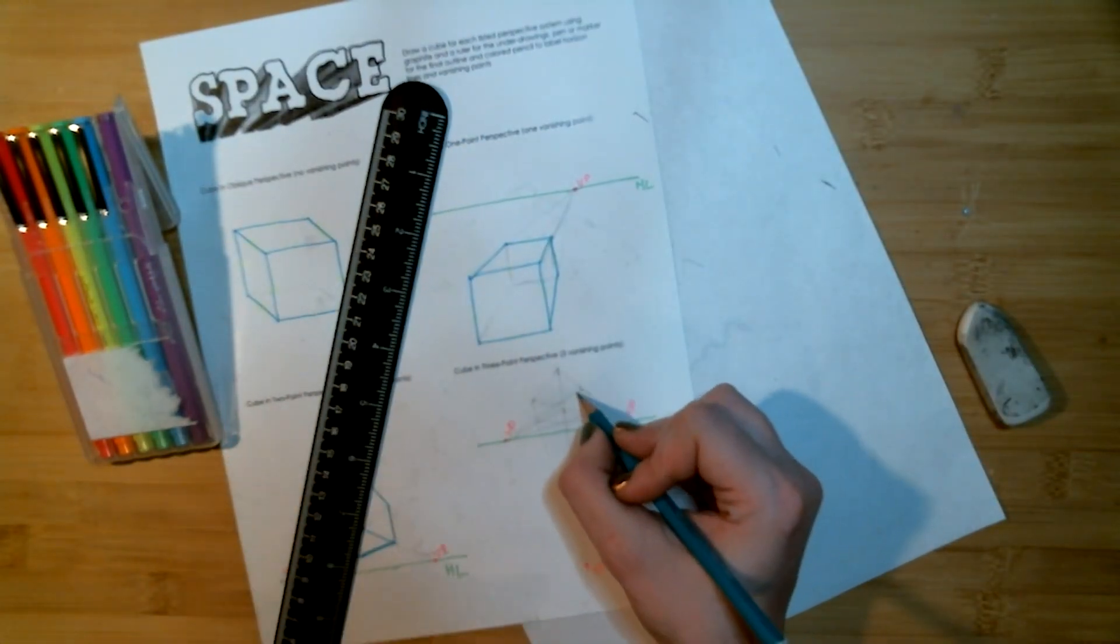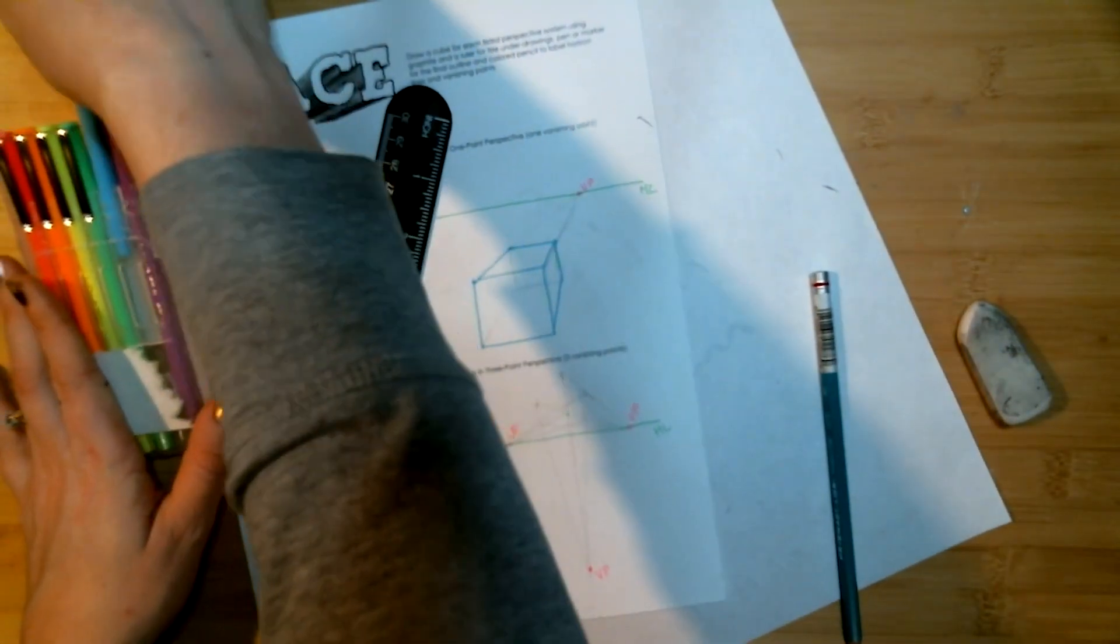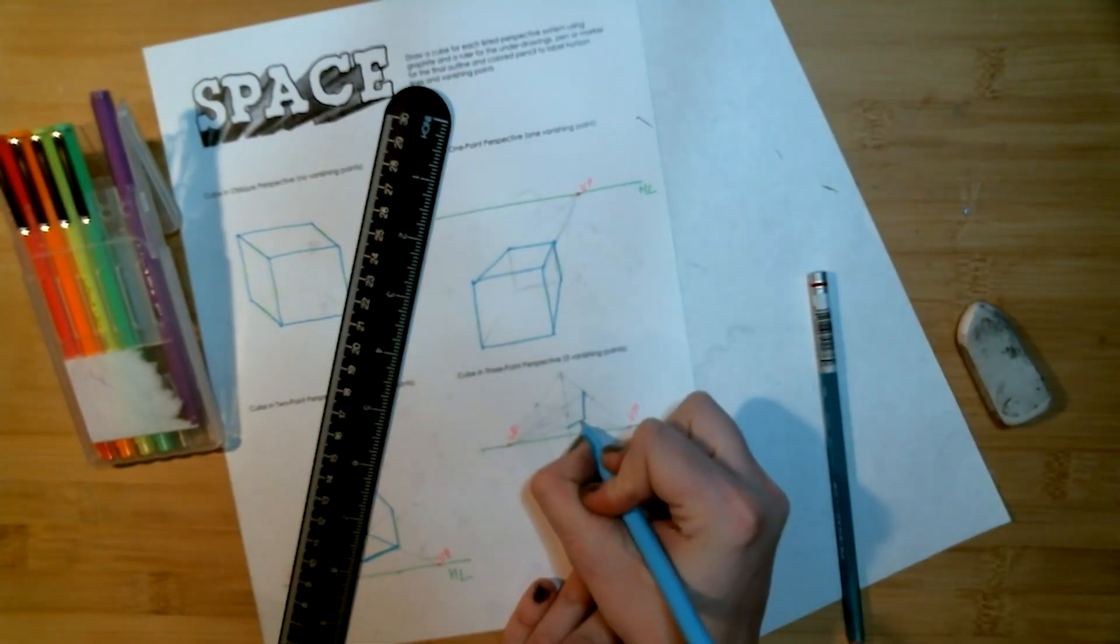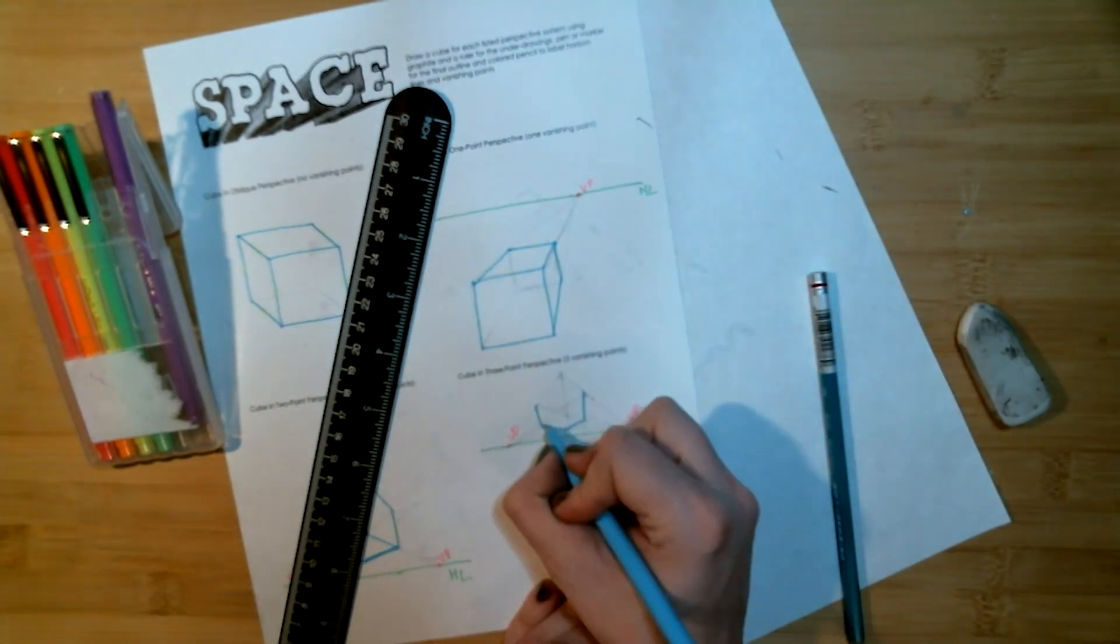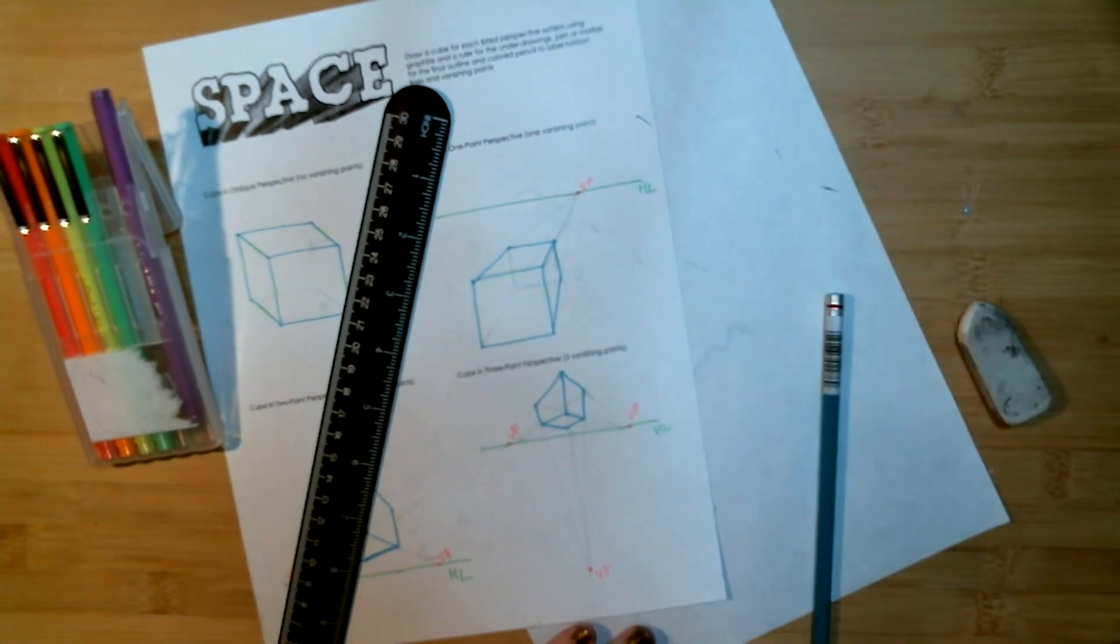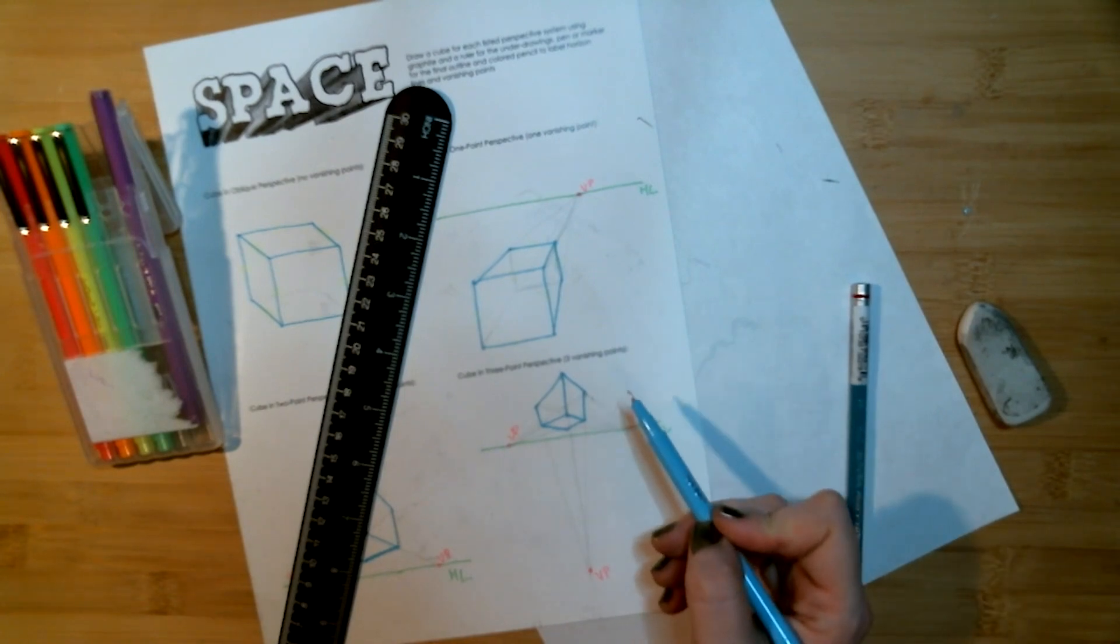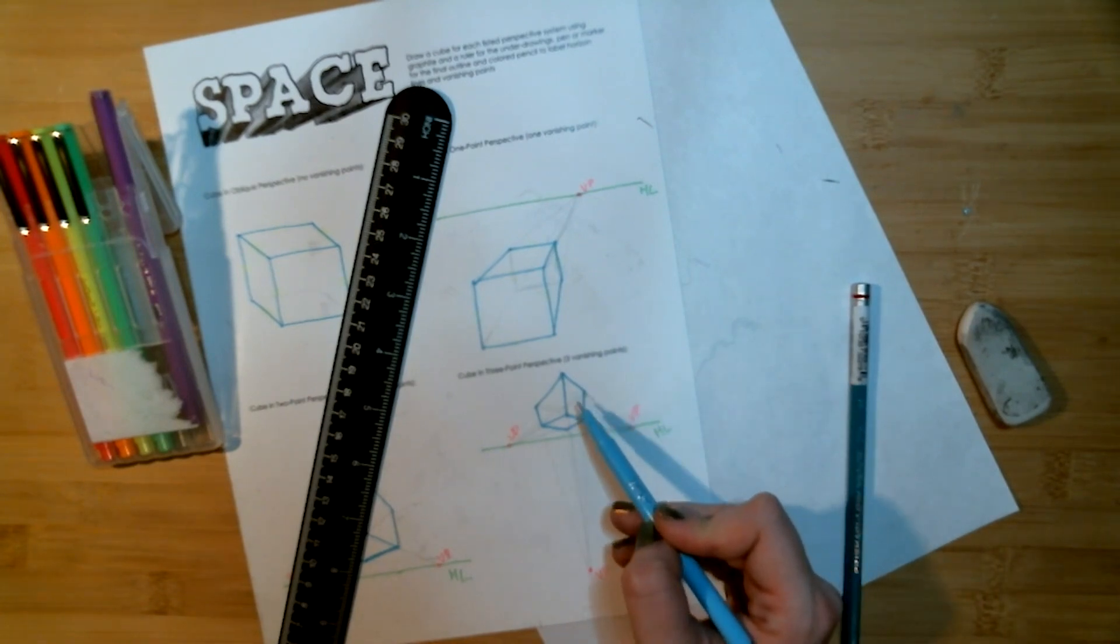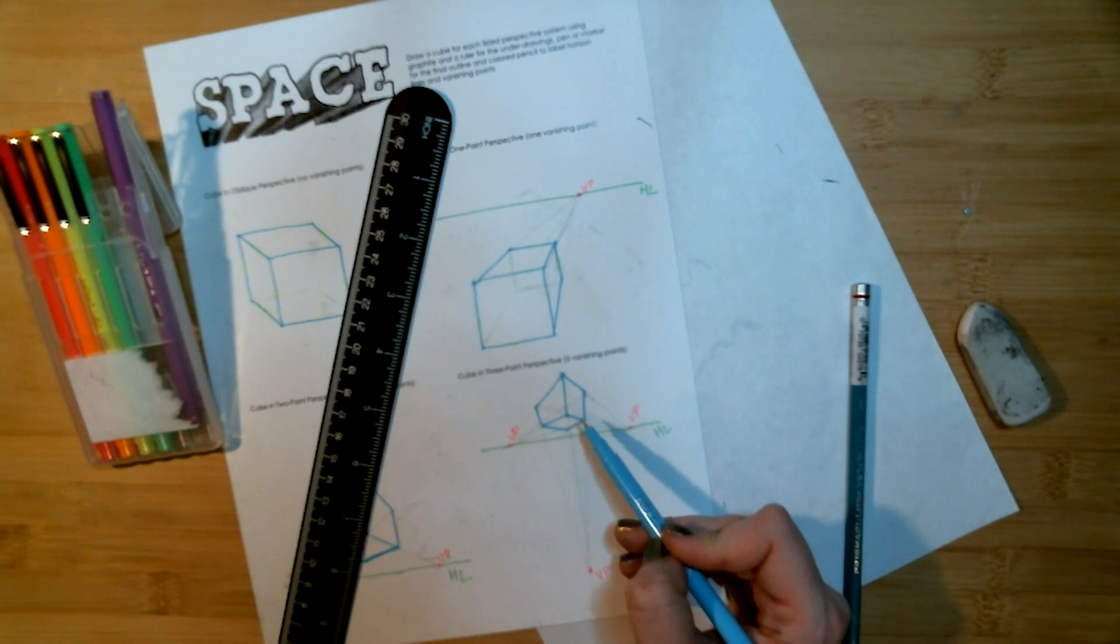And this gives us our full cube which I will now outline. That is a cube in three point perspective, zero series of parallel lines.